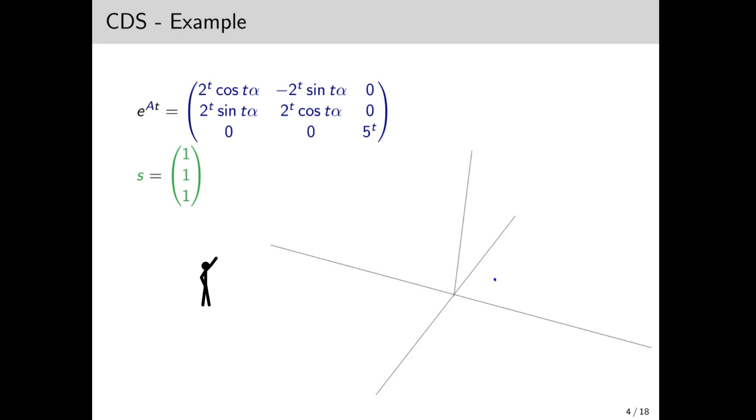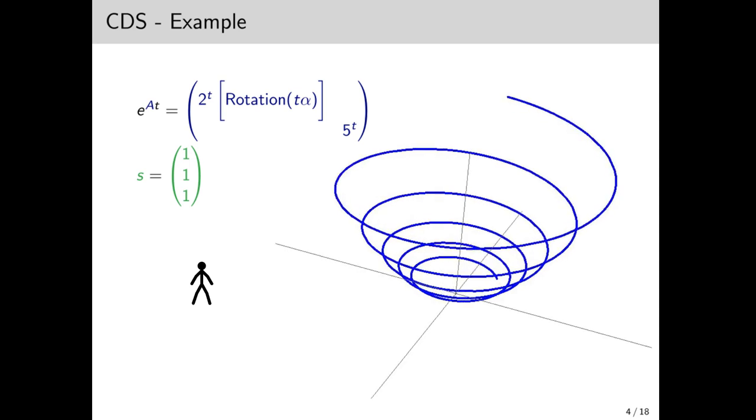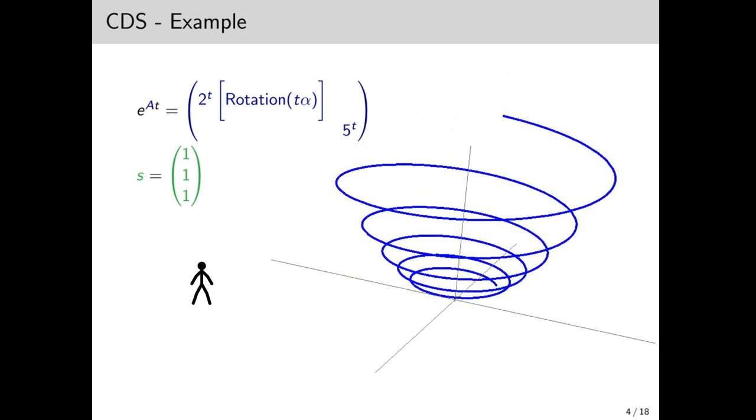This is actually true for the entire talk. There is never any need to worry. Anyway, this matrix can actually be thought of simply as a rotation by t alpha and a stretch by 2 to the t on the xy plane and a stretch by 5 to the t on the z axis. So as the system evolves, it spirals out and climbs up.